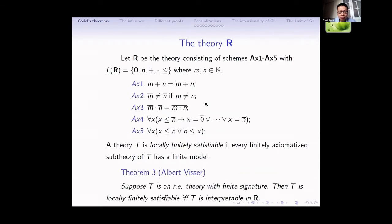In research in meta-mathematics, Robinson's theory R is very important. This theory is in the language of PA, but it has a primitive new binary predicate symbol. These are the axioms of R.